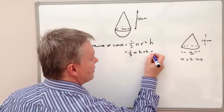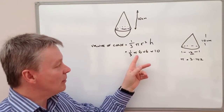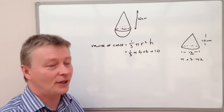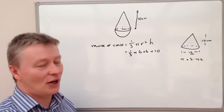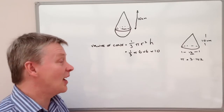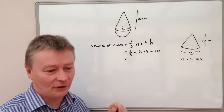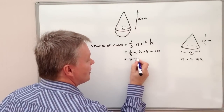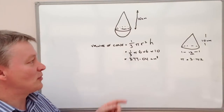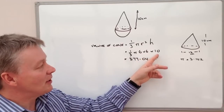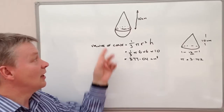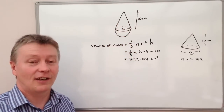The height h is 10 centimeters, so we multiply by 10. It's also important to make sure the units are the same all the way through — a common exam trick is to change one measurement to millimeters. Calculating that gives 377.04, and that's centimeters cubed because we're multiplying centimeters by centimeters by centimeters. So that gives us the volume of the cone for this particular shape.